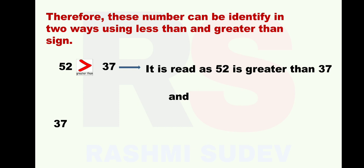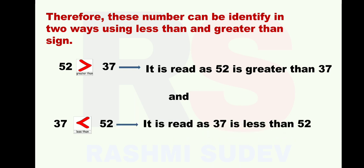Now let us reverse it again: 37 and 52. Here on the left hand side is 37 and on the right hand side is 52. 37 is the smaller number and 52 is the bigger number. Between 37 and 52, which sign are you going to put? As 37 is the smaller number, we are going to put the less than sign. How are you going to read this? It is read as: 37 is less than 52.